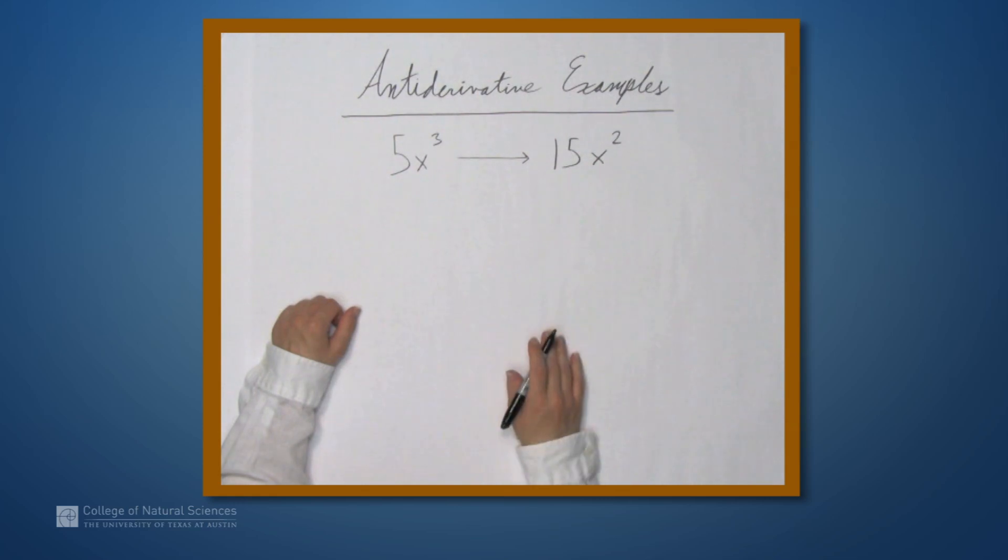So the process of finding a derivative is the process of going from 5x³ to 15x². When we find an antiderivative, we're simply going in the opposite direction. We're starting with a function, and we're looking for a function whose derivative is the one we start with. So if we started with 15x², then an antiderivative would be 5x³.